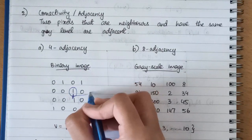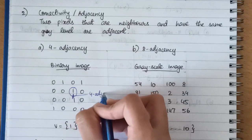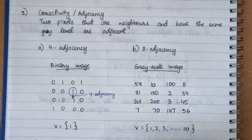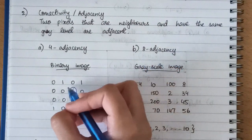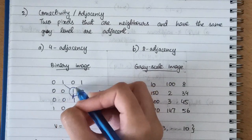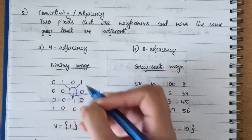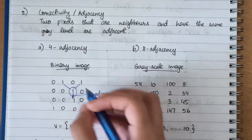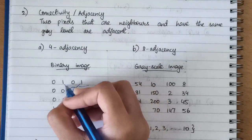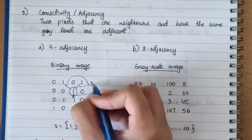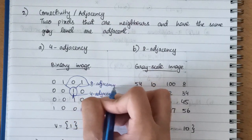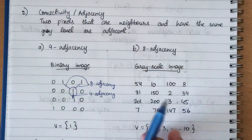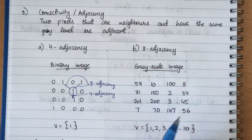If we want to connect using eight adjacency, then we connect to the diagonal elements as well — this connection and this connection. That is known as eight adjacency.